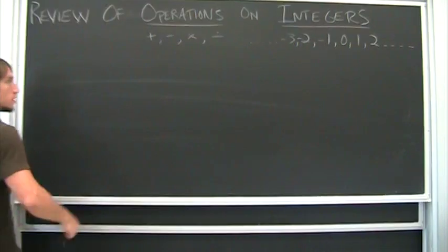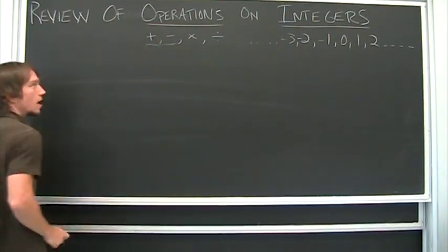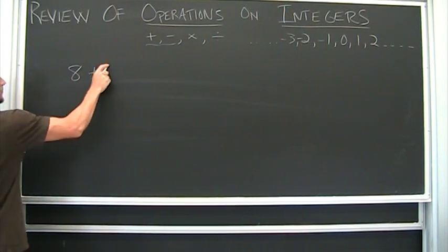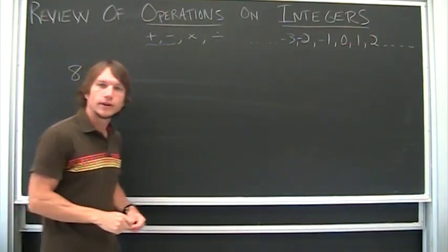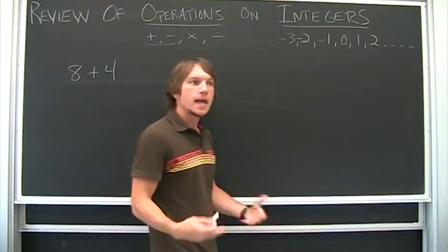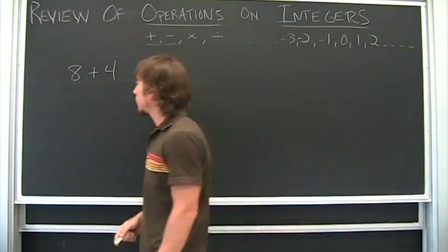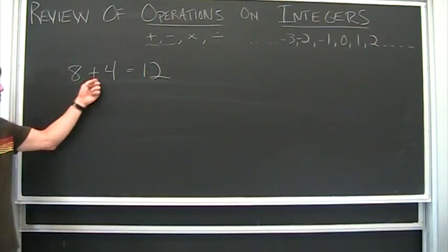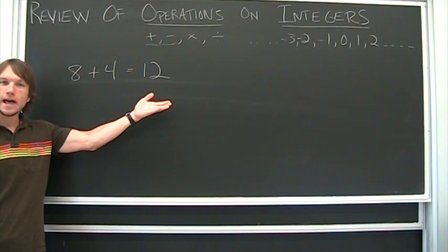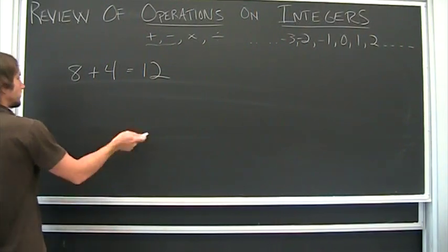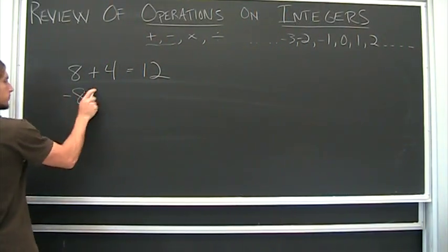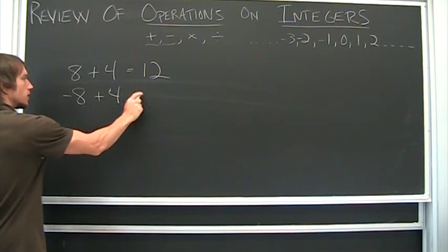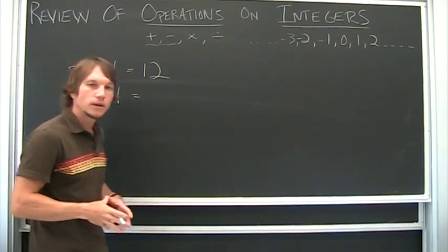There are four cases. I'm going to start with these two operations. So pick eight and four. Eight plus four — hopefully we know — we get twelve. The point here is that's an easy case where they're both positive, you add. Now what about if I make the first one negative? Here's where some people have trouble.